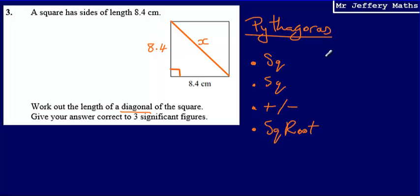So first of all, we are going to square one of our sides that we've got. So we're going to do 8.4 squared. Then we are going to square again. We're going to square the other side, which in this case is also 8.4. Then we're going to add or subtract. This is the bit where we need to make a decision. Are we going to add our answers to 8.4 squared and 8.4 squared together, or are we going to take them away?